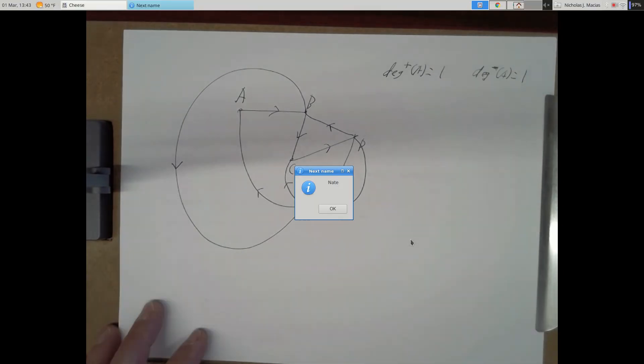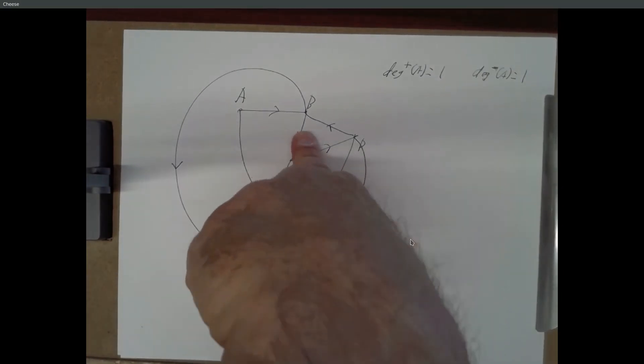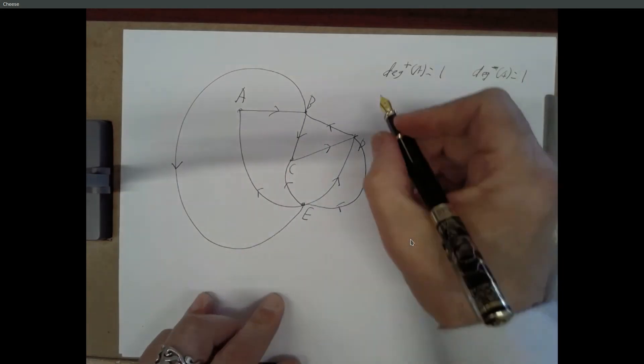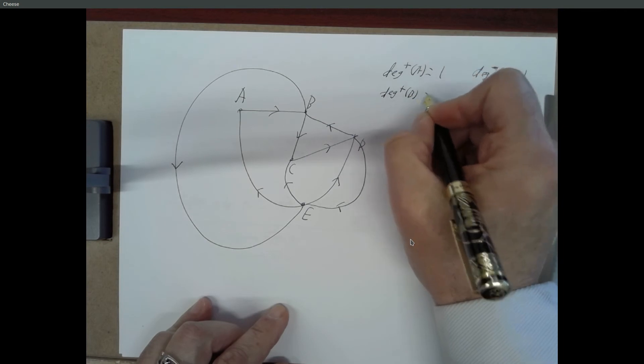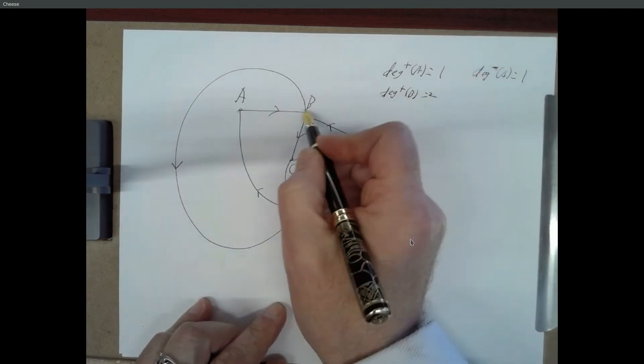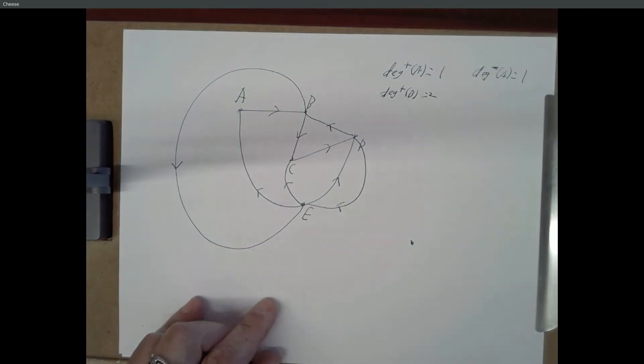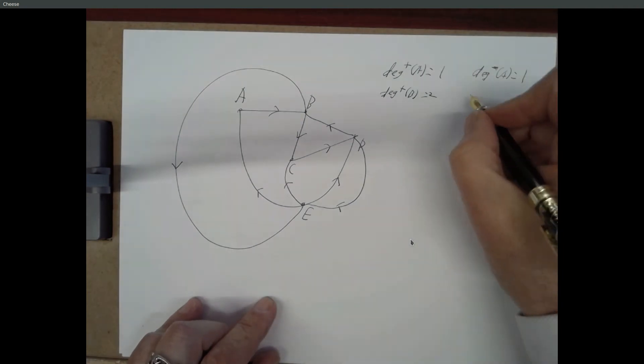All right, so how many edges are going into B, Nate? Two. Two. All right, we got 1, 2. And how many are going out of B? Two as well. Also 2. Two. Awesome.